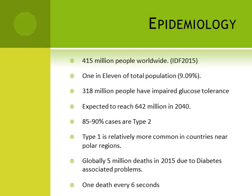Epidemiology is important because it tells us the prevalence, the importance, and the impact of the disease on general life. About 415 million people worldwide had diabetes according to the International Diabetes Federation in 2015 — that means about 1 in every 11 persons was diabetic at that time. Currently the situation is much worse.